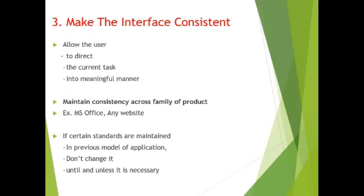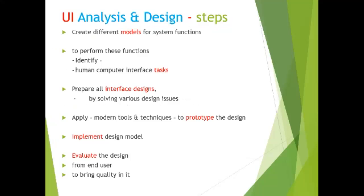The third golden rule is to make the interface consistent. Allow the user to direct the current task in a meaningful manner. Maintain consistency across a family of products — for example, MS Office or any website. If certain standards are maintained in a previous model of an application, don't change it unless it is necessary.